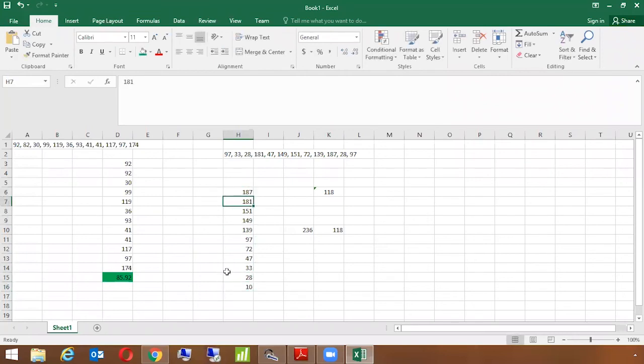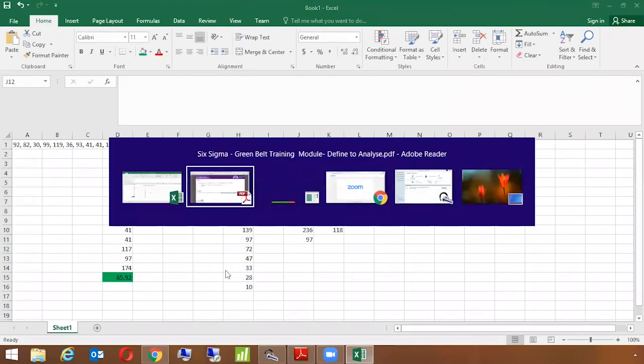With 11 values, 97 is the median. I can verify this with Excel also. It should come to 97, fingers crossed. Yes, it's 97. So 97 is the median for this value set.